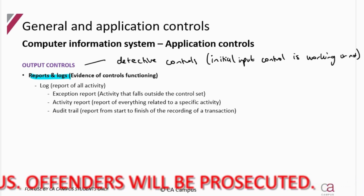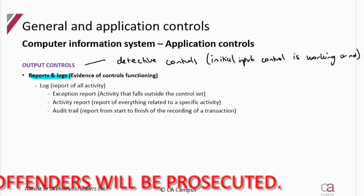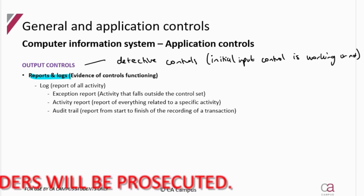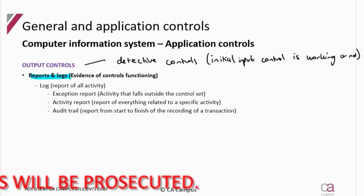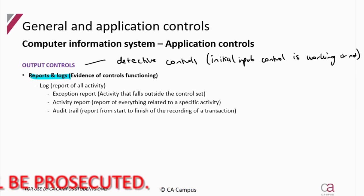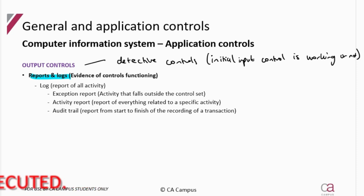Your input controls are there to try and prevent misstatements. Alphanumerical checks try to prevent you from putting a number where it should be a letter. A sign check and a size check make sure you put the correct information upfront. So those input controls are preventative — they prevent a mistake from the start — whereas your output controls are there to detect if those preventative controls have done their job.